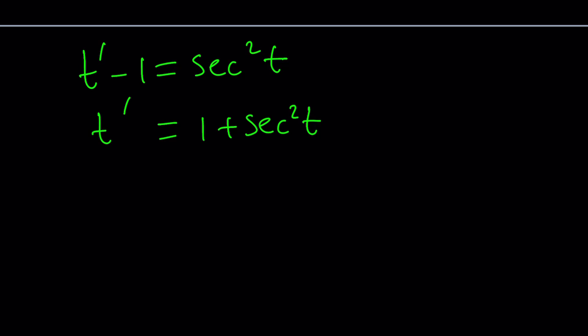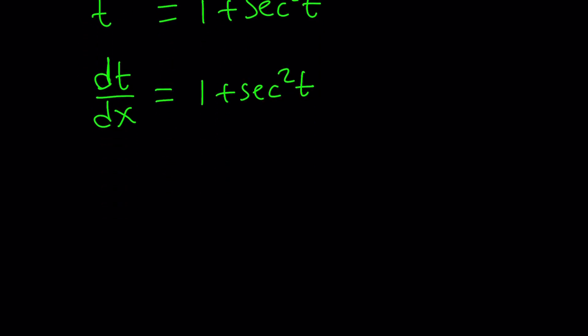What does t' mean? It's the derivative of t with respect to x. Let's use Leibniz notation and write it as a fraction. dt/dx, which is the derivative of t with respect to x, can be written as 1 + sec²t. This is a separable differential equation, which is one of the best kinds. Let's put the t's together and then put the x on the right-hand side.